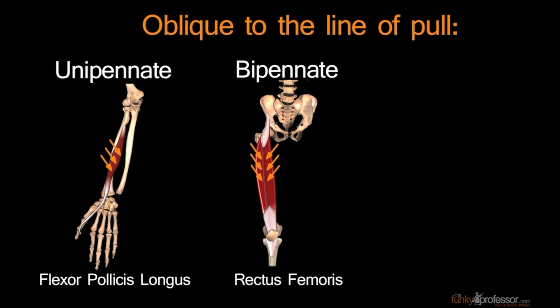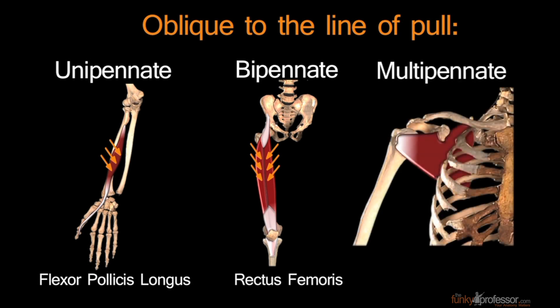And finally, multipennate muscles are muscles where muscle fibers run obliquely into the tendon, but from various directions. These multipennate muscles are very powerful muscles, and a very fine example is the subscapularis, the powerful internal rotator of the shoulder joint.